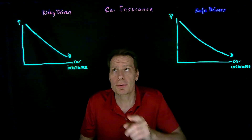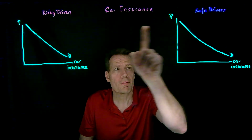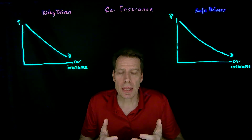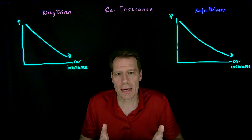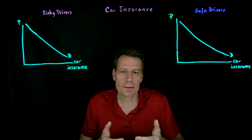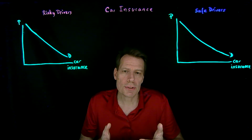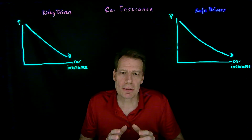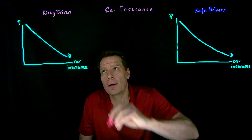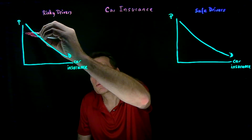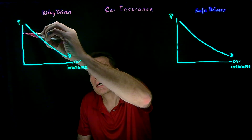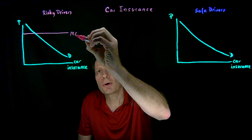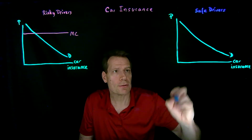We have two kinds of drivers: risky drivers and safe drivers. Risky drivers are more likely to get into an accident and therefore more likely to cost the insurance company money. So the expected marginal cost of serving risky drivers is going to be higher than the expected marginal cost of serving safe drivers.